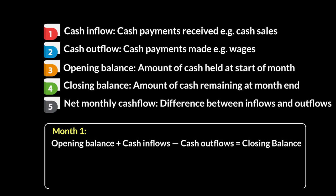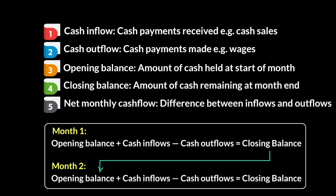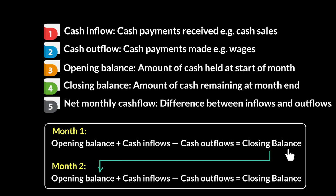Opening balance plus cash inflows minus cash outflows will equal your closing balance. And as we've learned, the closing balance of one month then becomes the opening balance of the next month. So we see that the green line here indicates that whatever this figure is — if this is 20, then for month two the opening balance becomes 20 — and then the same formula repeats itself: plus inflows minus outflows equals closing balance. Closing balance of month two will become the opening balance of month three. Remember this — this will save you every time you're stuck with cash flow.